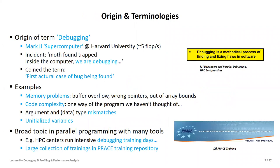Let us look at what debugging really means and its origin. It's called 'debugging' because a moth was once found in a computer — actually stopping the Mark 2 supercomputer at Harvard — and this is the first real case where the word 'bug' is found. More formally, debugging is a methodological process of finding and fixing problems and flaws in software. For us, parallel debugging is of high interest — we start with serial debugging but quickly move to parallel computing debugging, which is much more complex.